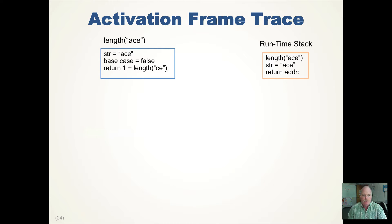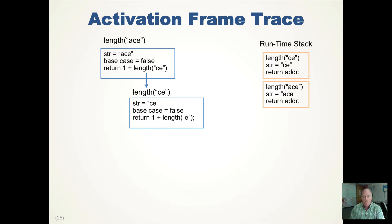Let's trace that length method when we calculate the length of the string "ace". Someone called length with the string ace. On the right-hand side you can see the runtime stack shows the length ace call, the parameter ace, and it remembers the return address. The base case is false, so we return one plus and call the method length on the string "ce". That causes another activation record to be pushed onto the runtime stack. The string is now ce, and we're returning to the length ace call right before the plus.